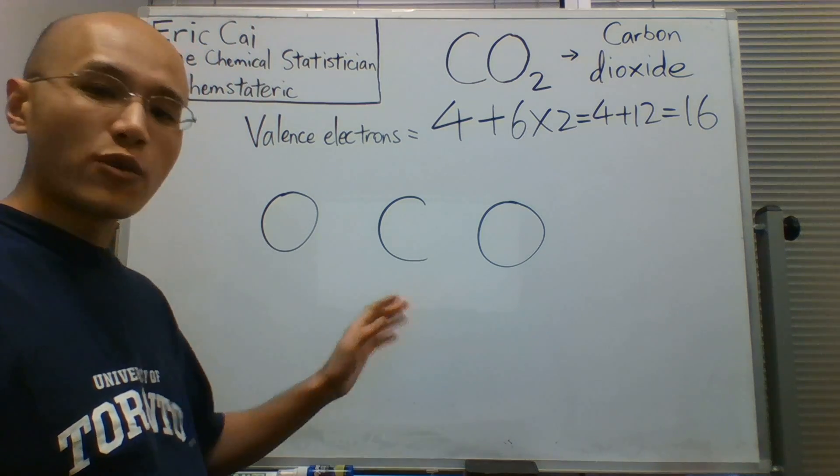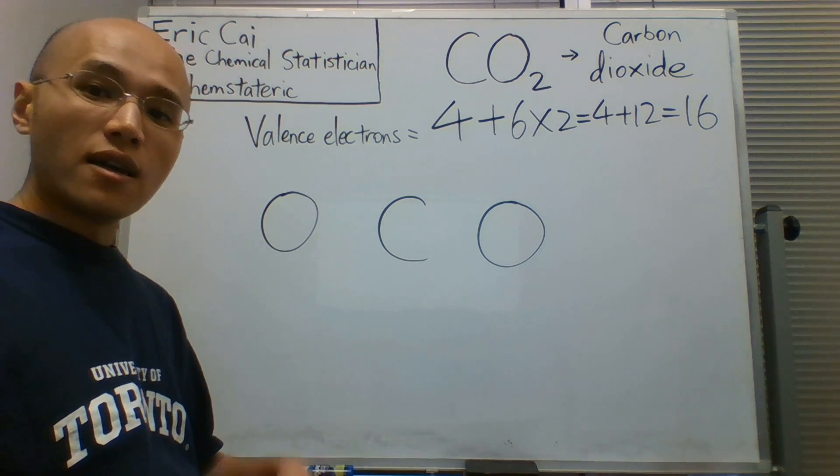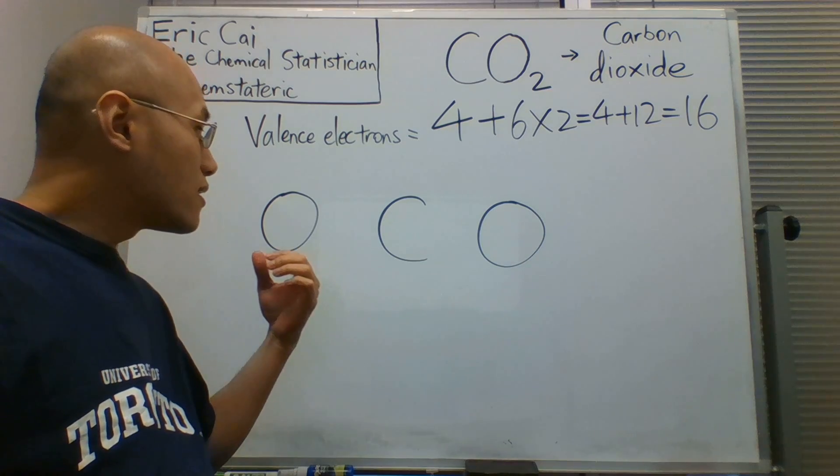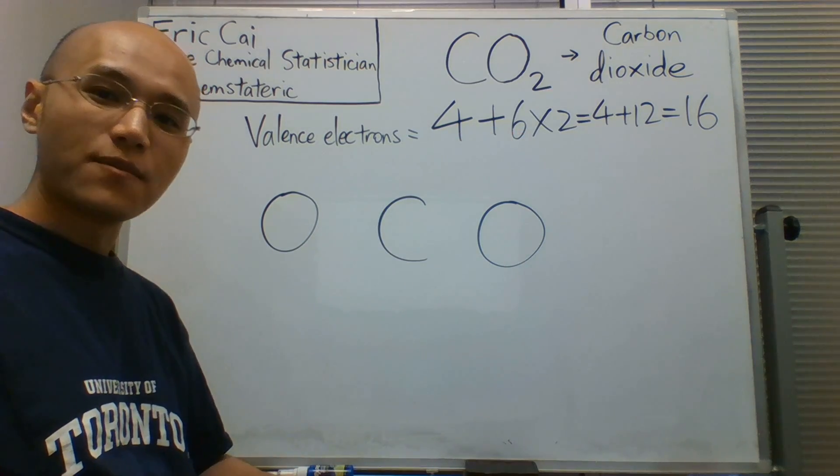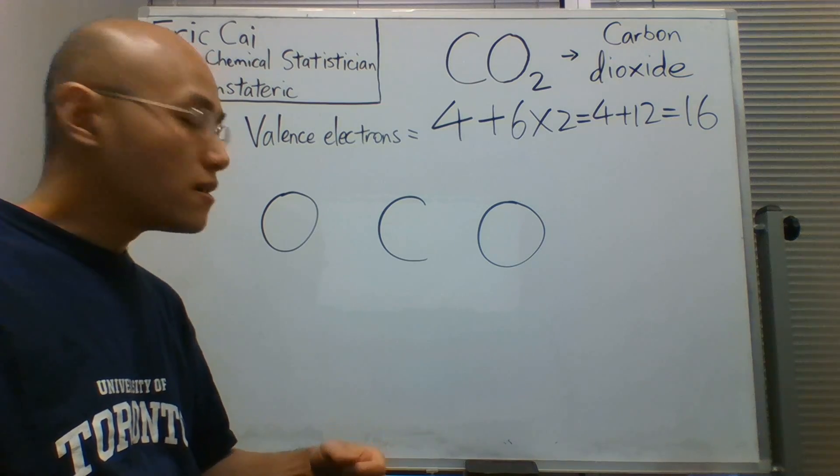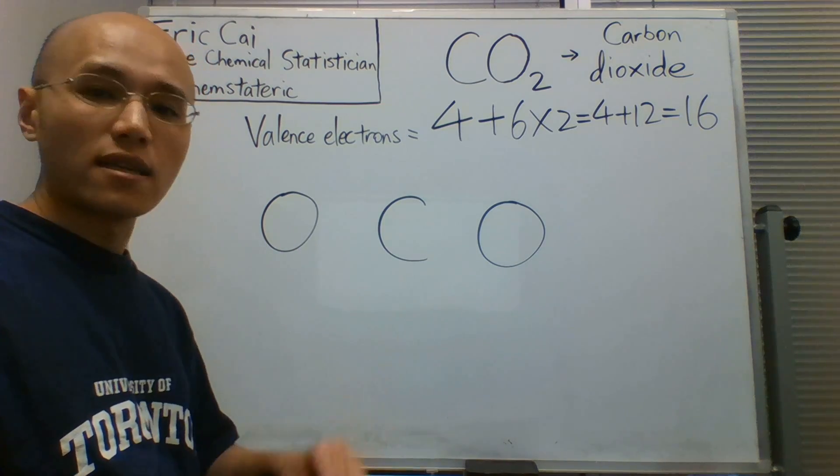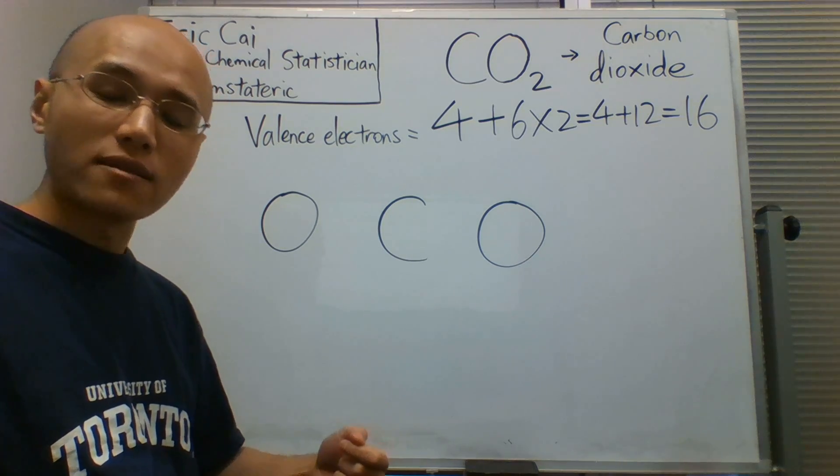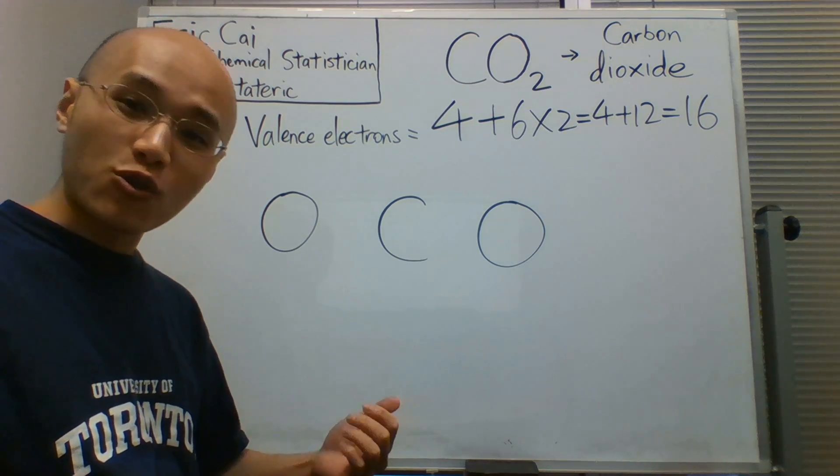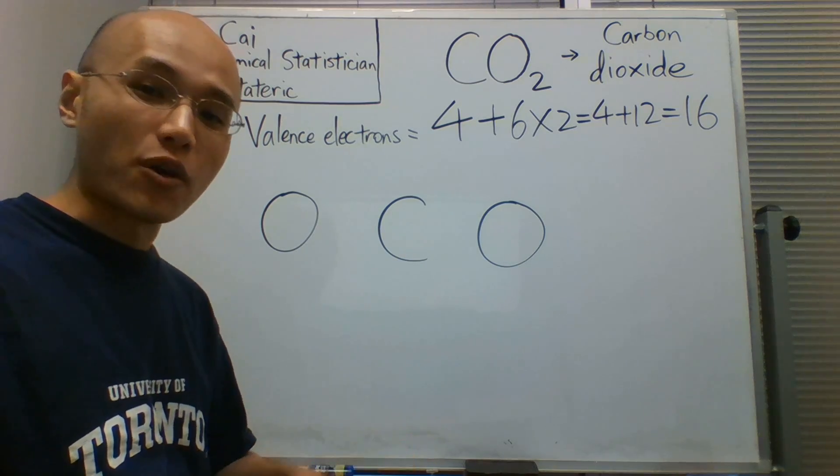Now that we have the geometry, let's fill this diagram with those 16 electrons. To begin, let's draw the bonded electrons, and I encourage you to start by assuming that the bonds are single bonds. That's not necessarily true, but it's a good starting point.